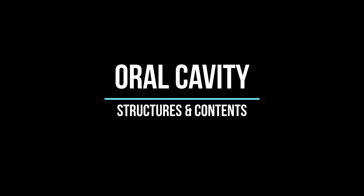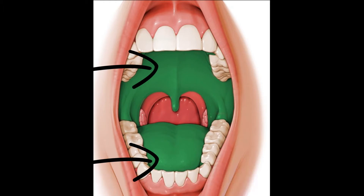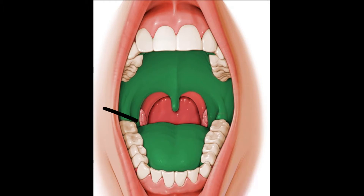Hey guys, it's Layla. Today we'll speak about the oral cavity. The area in green is the oral cavity — it is known as the oral cavity proper. You've got the palate and the oral floor with the tongue and teeth.